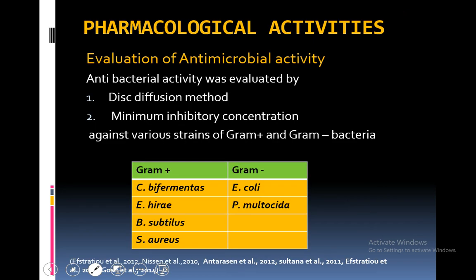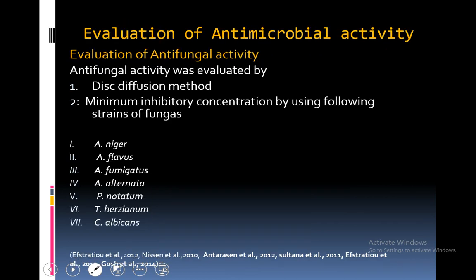Antimicrobial potential was determined using disc diffusion method and minimum inhibitory concentration method using various gram-positive and gram-negative bacteria. Antifungal potential was also determined by disc diffusion and minimum inhibitory concentration using various strains of fungi: Aspergillus niger, A. flavus, A. fumigatus, A. alternata, P. notatum, T. harzianum and Candida albicans.